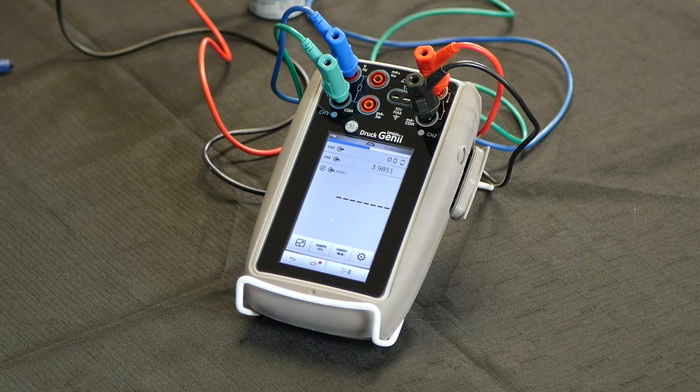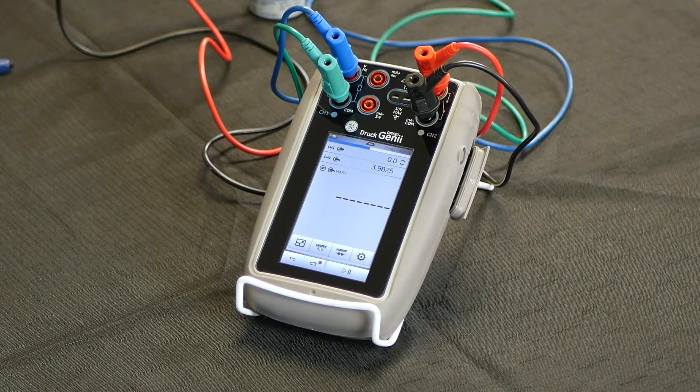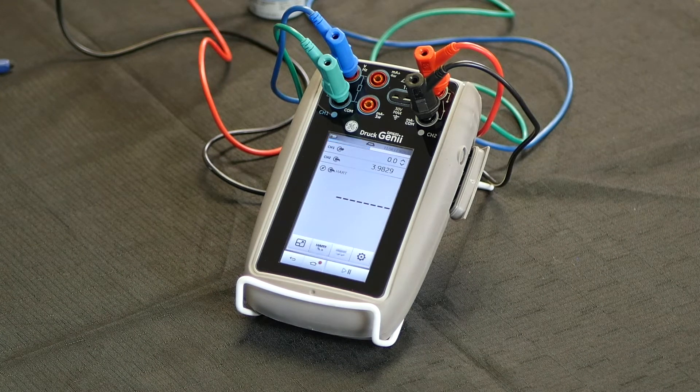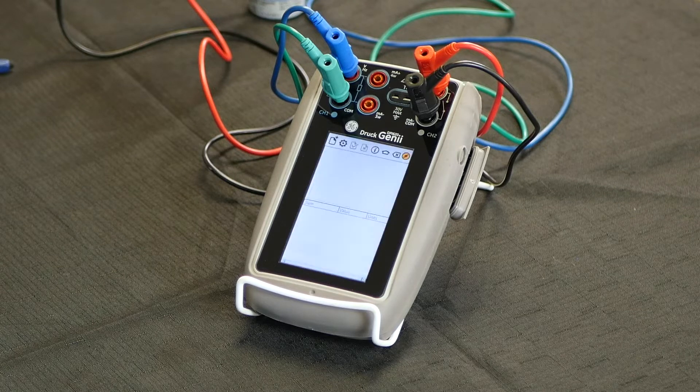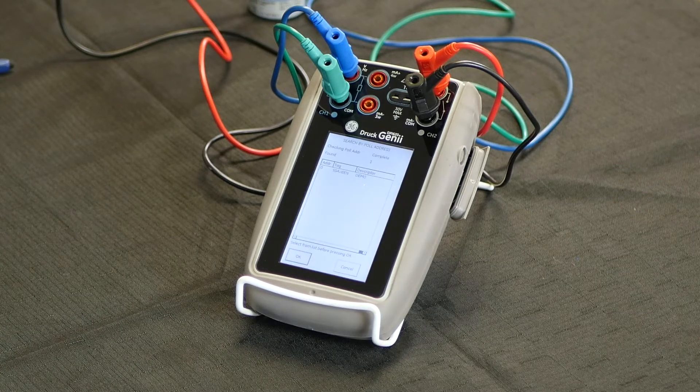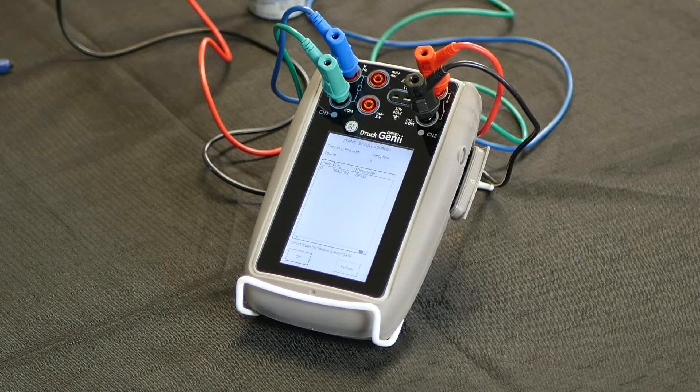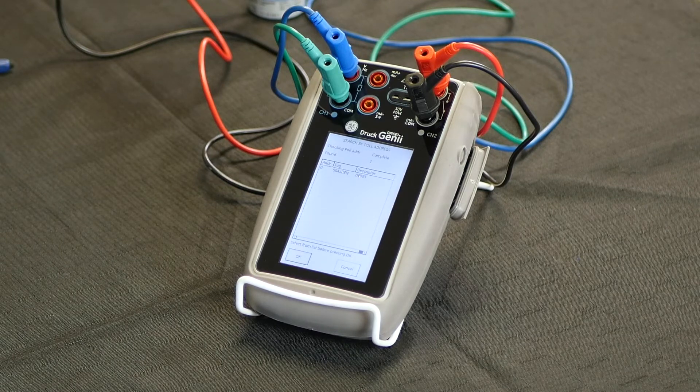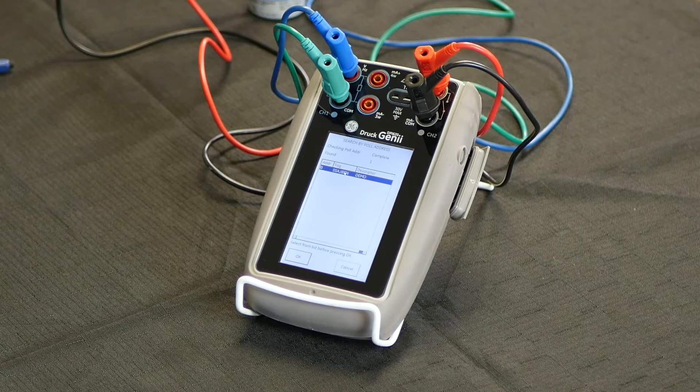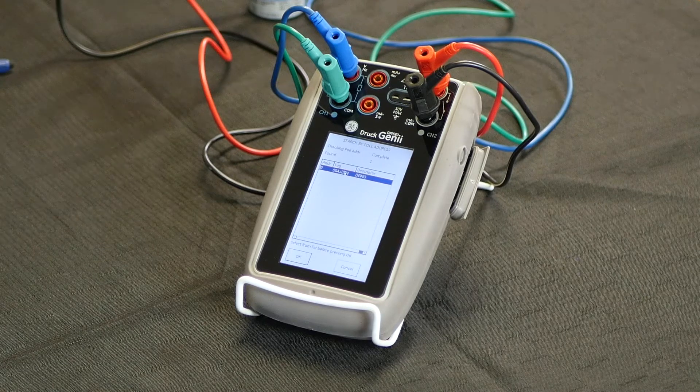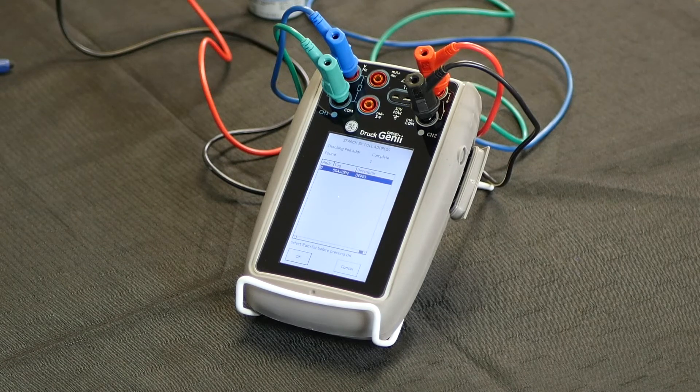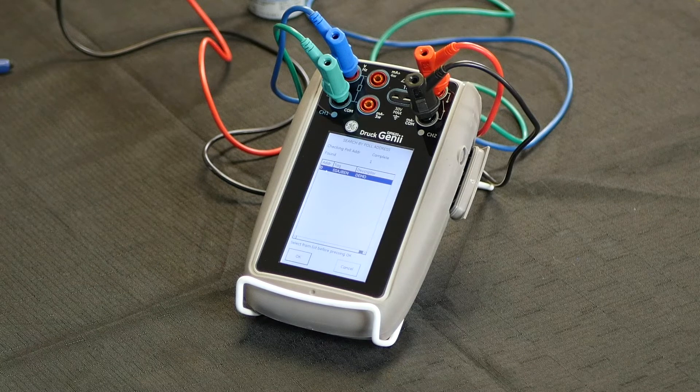Now I'm going to go into the online functionality of the communicator by clicking this button here. And the DPI 620 will go looking for HART devices on the loop. We currently only have one, so it's showing our unit. If there were multiple units on the loop, they would be displayed in a list here with their corresponding address number.